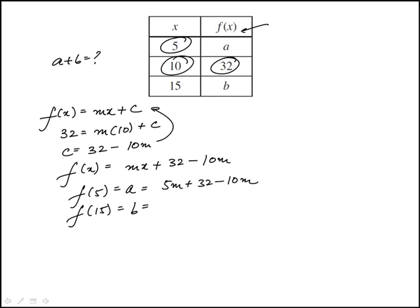If I add these two equations, a plus b would be 20m plus 64 minus 20m.